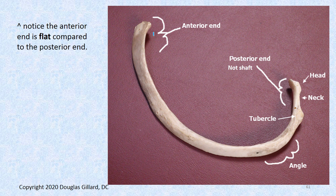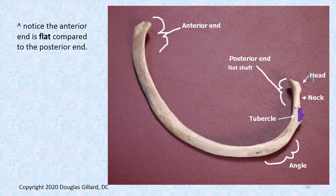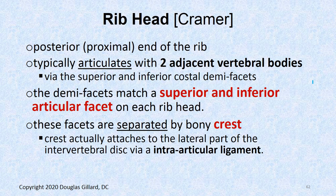Again labeled: anterior end, posterior end, tubercle, angle where the rib bends the most, the neck — which is smooth and where some key ligaments connect — and then the head. The rib head is the proximal or posterior end of the rib, and it articulates with two adjacent vertebral bodies in most cases.